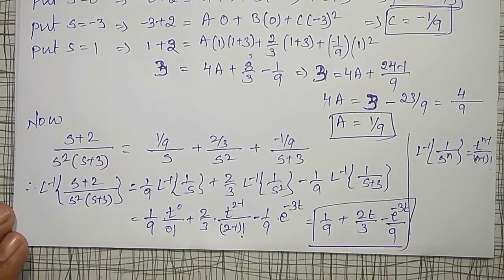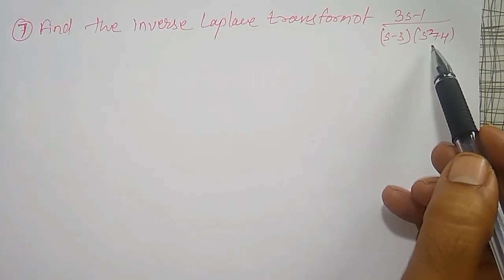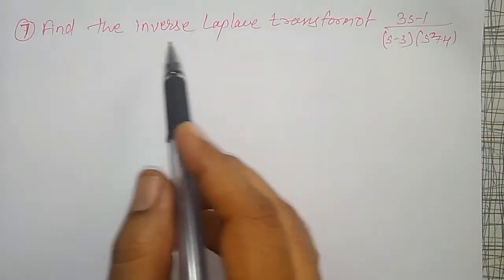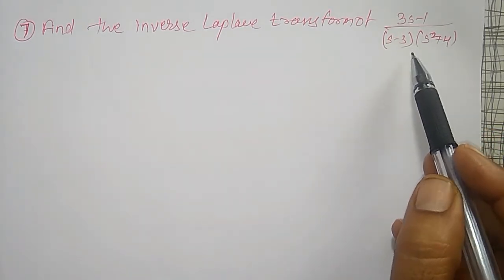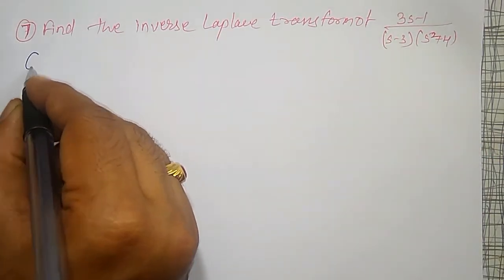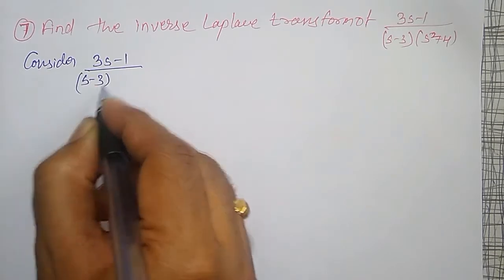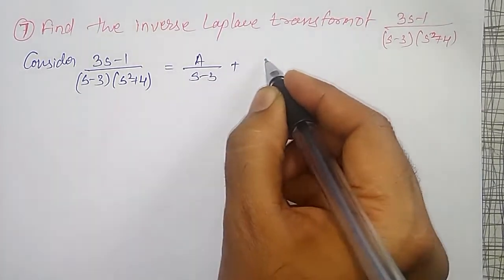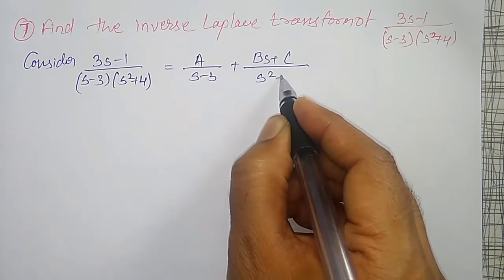Another example in the same video — find the Inverse Laplace Transform of (3s−1) divided by (s−3)(s²+4). This is also in quadratic form. We can use the convolution theorem, but I am using partial fractions here. The denominator is again a product of two standard forms, so I will split it using partial fractions.